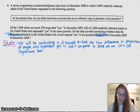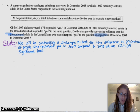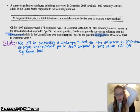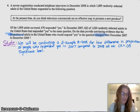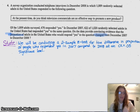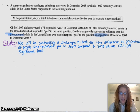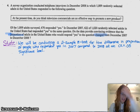So first you want to tell your audience what it is that you're going to be doing and at what significance level, or if you're doing a confidence interval, at what confidence level. I'm doing a two-sample z-test for the difference in proportions of people who responded yes in 2007 compared to 2008 at an alpha level 0.05 significance level. And then for a significance test, you have to do your hypothesis tests.